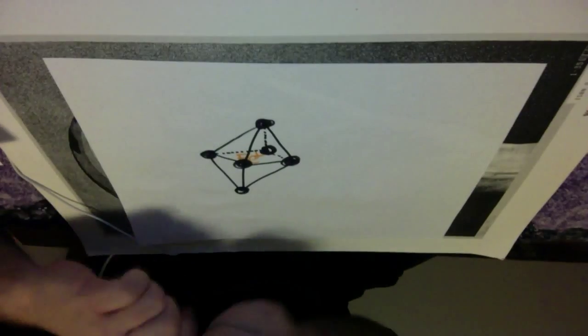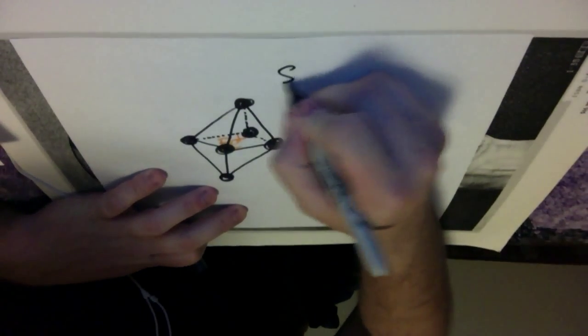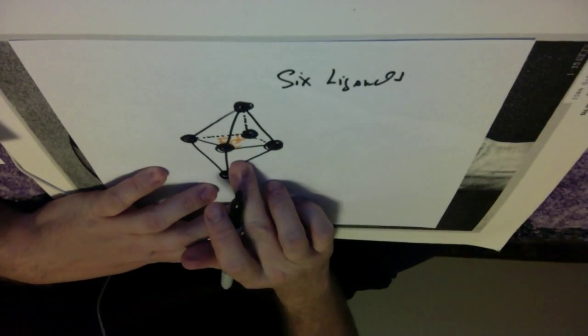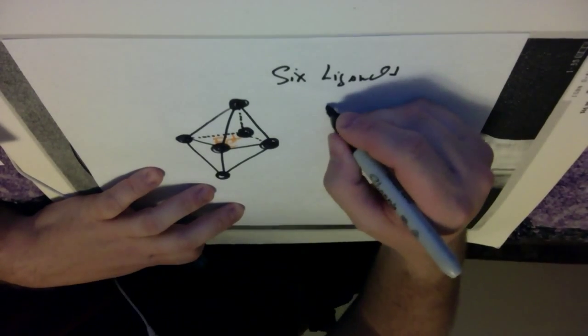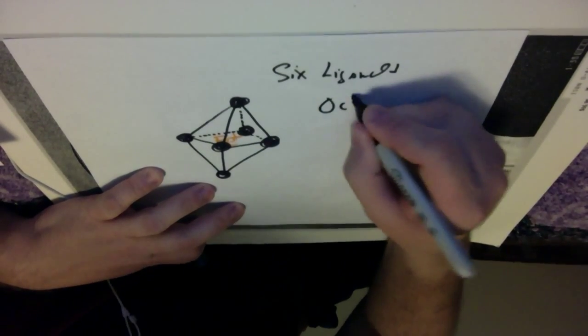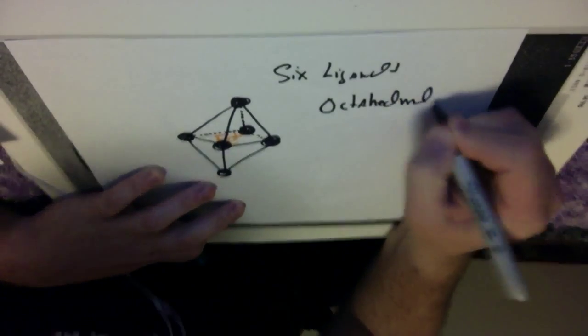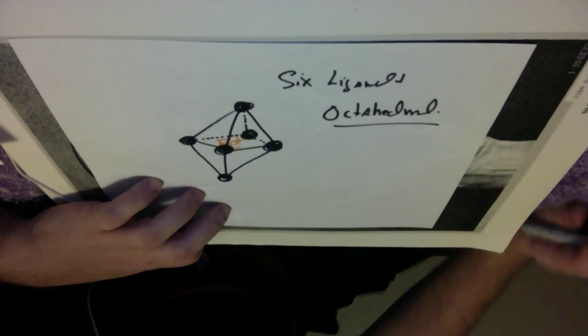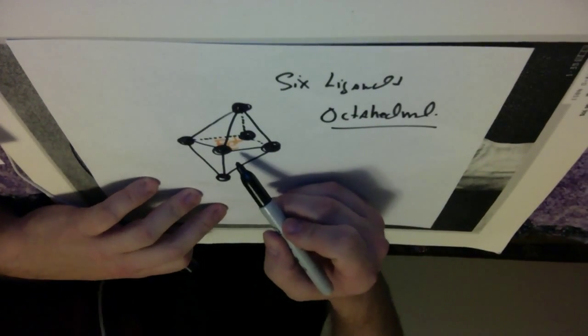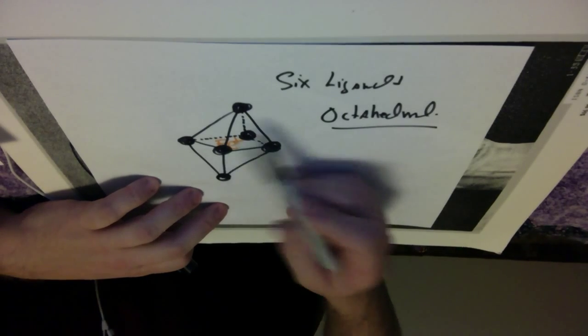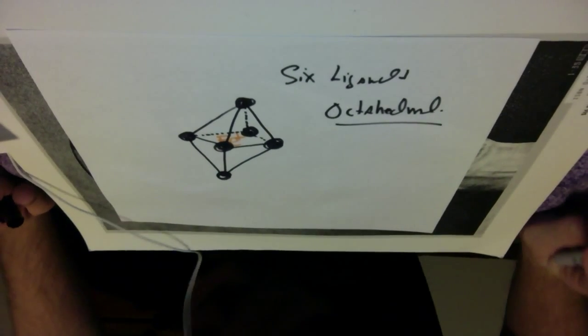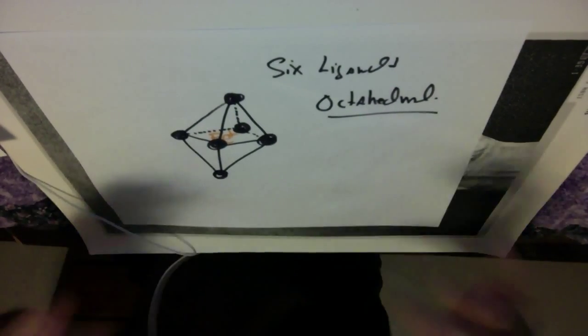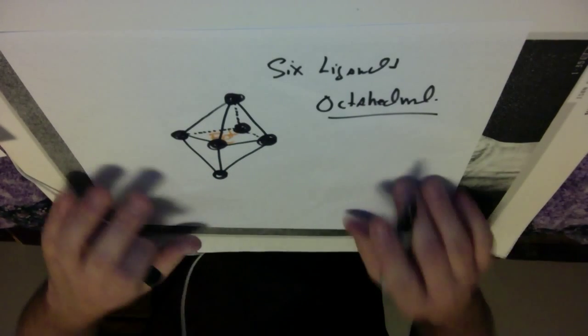Okay, so when we have 6 ligands, like this here, 6 ligands almost always create an octahedral geometry. The 3-dimensional geometry of that is octahedral. So it kind of looks like a crystal, an octahedral, an octahedron crystal, which is where kind of the term crystal field theory comes in.